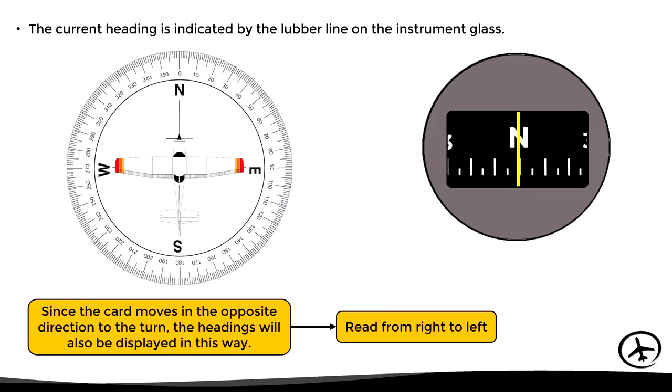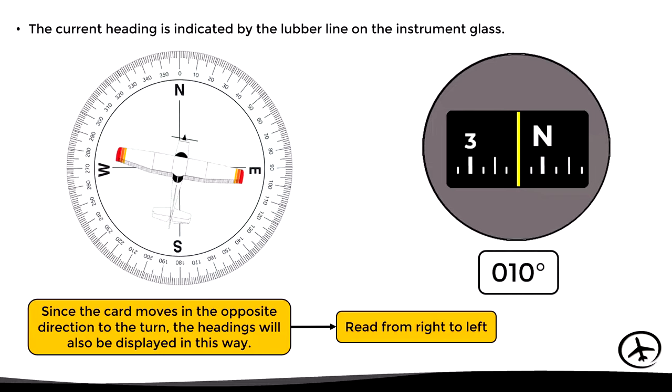This may sound a bit confusing so far, so let's see a couple of examples. First, let's suppose the aircraft makes a right turn to heading 010. As we can see, heading 010 is displayed to the left of north in the compass card. In other words, we are counting degrees from right to left starting from zero degrees in the north.